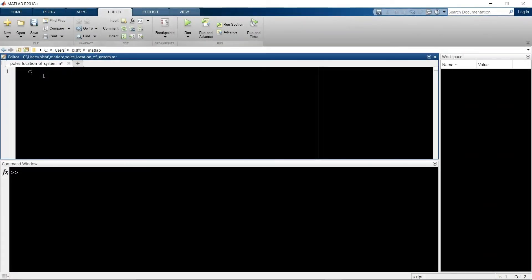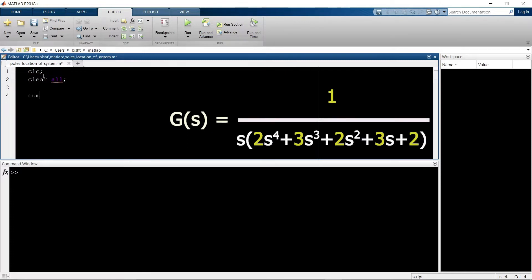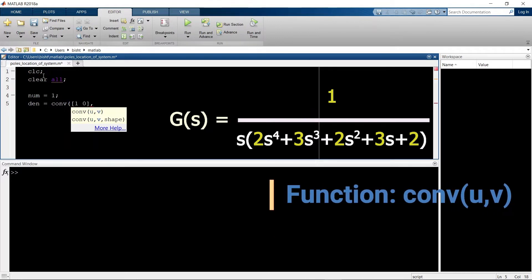Open your MATLAB and open a new script. First we have to define the gain of the system, so create numerator and denominator variables which contain coefficients of numerator and denominator polynomials respectively. If numerator or denominator are not given in polynomial form and given in factor form, use convolution to multiply two or more factors.